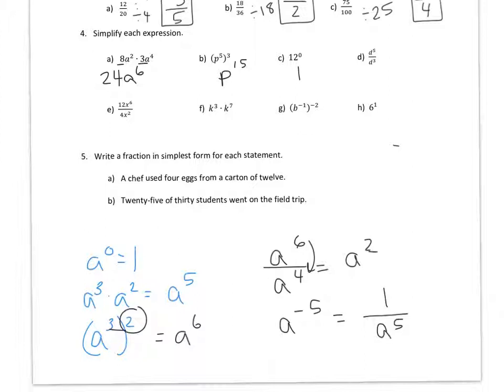C, 12 to the zero is 1. Any number to the zero power is 1. D is division, so you're going to subtract the exponents, so it's D squared. E, you're going to divide 12 divided by 4 because those are the coefficients. And then you're going to subtract, so it's X to the fourth. F, you're going to add the exponents, so it's K to the tenth.